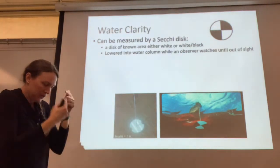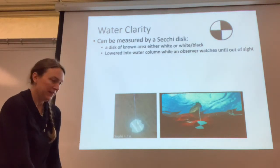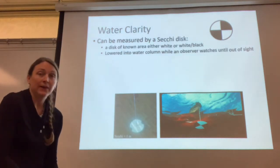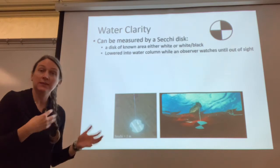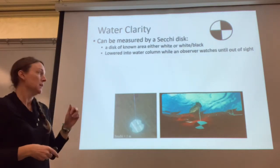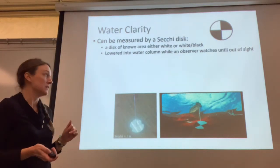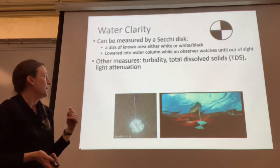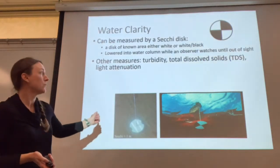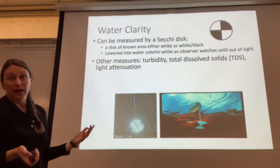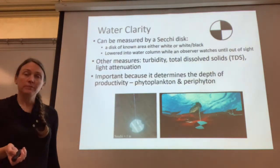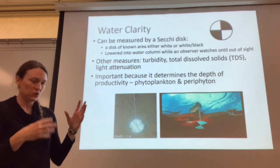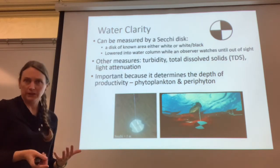Someone lowers the Secchi disc while another person watches, usually lying flat on the deck with something covering their head to reduce glare. You watch as it's lowered and say when you can no longer see it; they lower it a bit further, then raise it back up, and you say when you can see it again — giving you two measurements of Secchi disc depth each time. This helps you understand water clarity, and you can also measure turbidity and total dissolved solids. It's an important measure because it tells you the depth at which productivity — photosynthesis by algae — can take place.